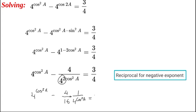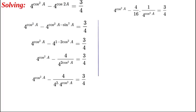This is equal to 3/4. Okay, so let's look at this carefully. So we have 4 over 16 now, and we have 1 over 4^(cos²A).